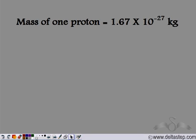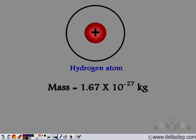A number of experiments were performed and it was shown that the mass of one proton is 1.67 × 10⁻²⁷ kg. A hydrogen atom has only one proton, no neutrons, and one electron. The mass of a hydrogen atom is 1.67 × 10⁻²⁷ kg, which is the mass of a proton, because the mass of an electron is quite negligible compared to the mass of a proton.